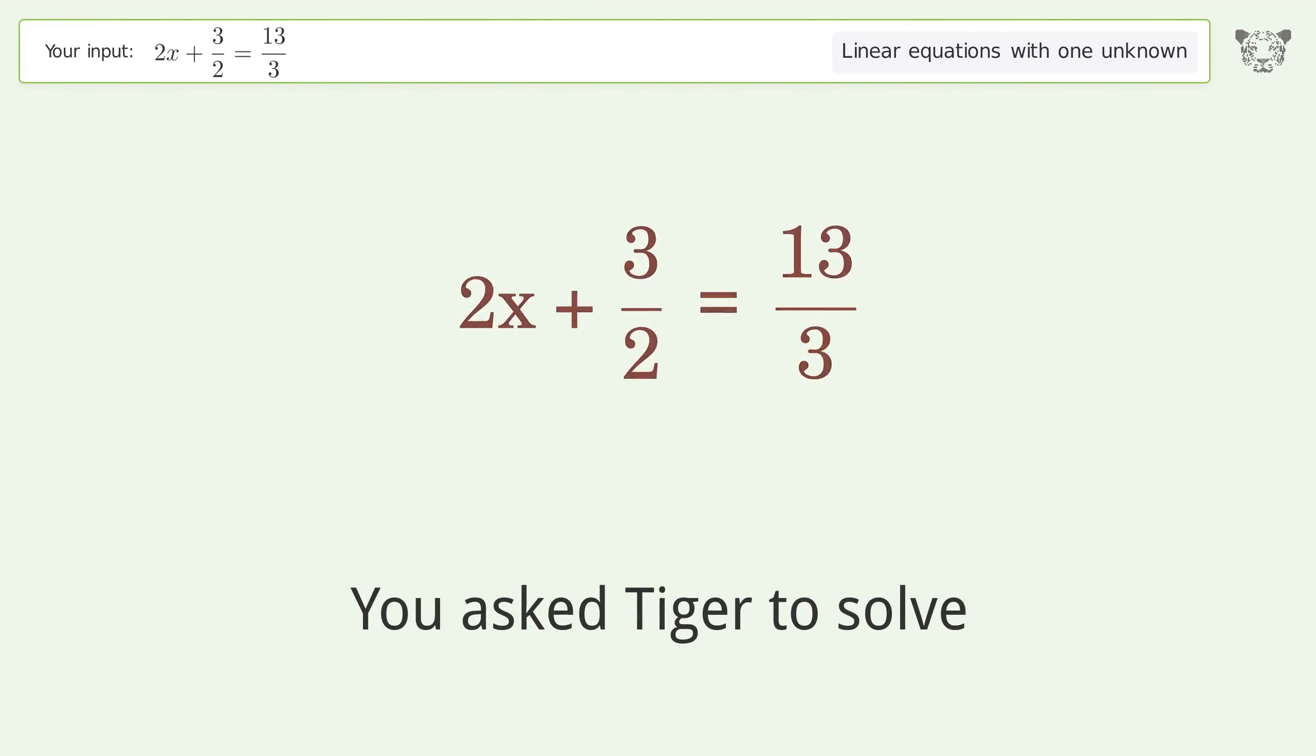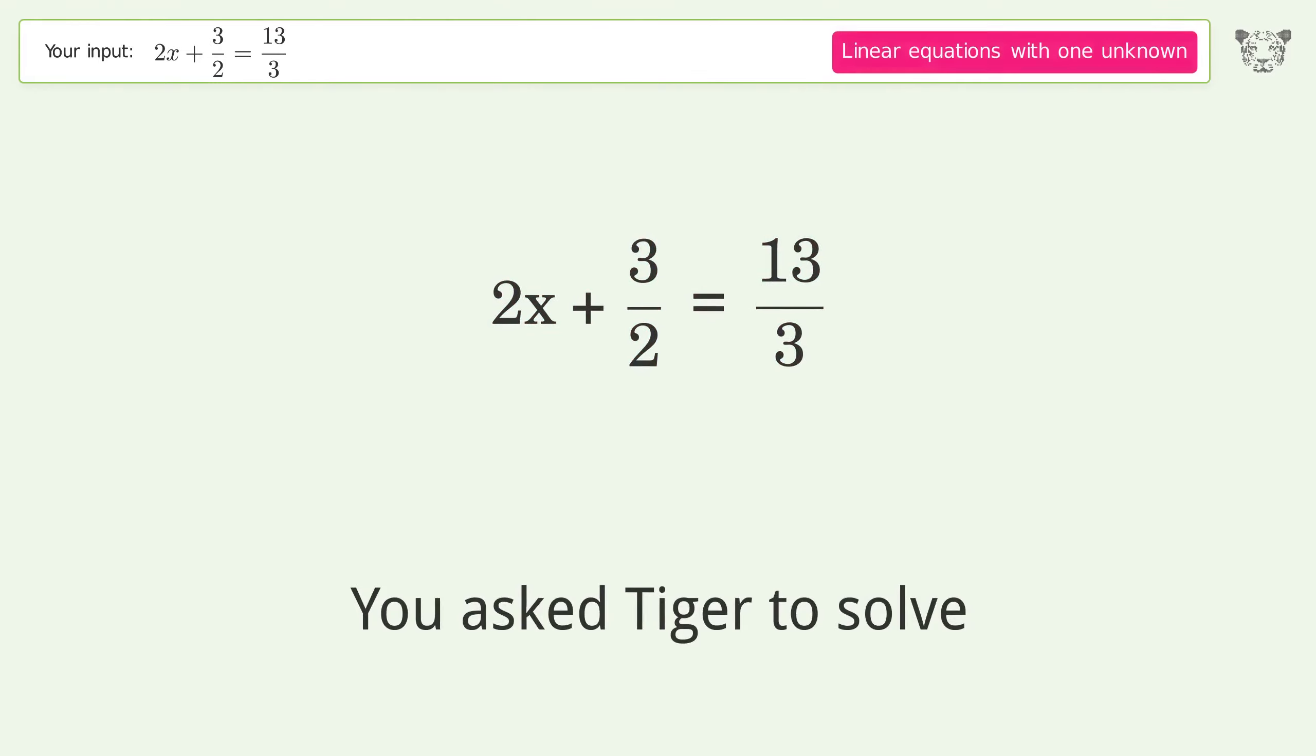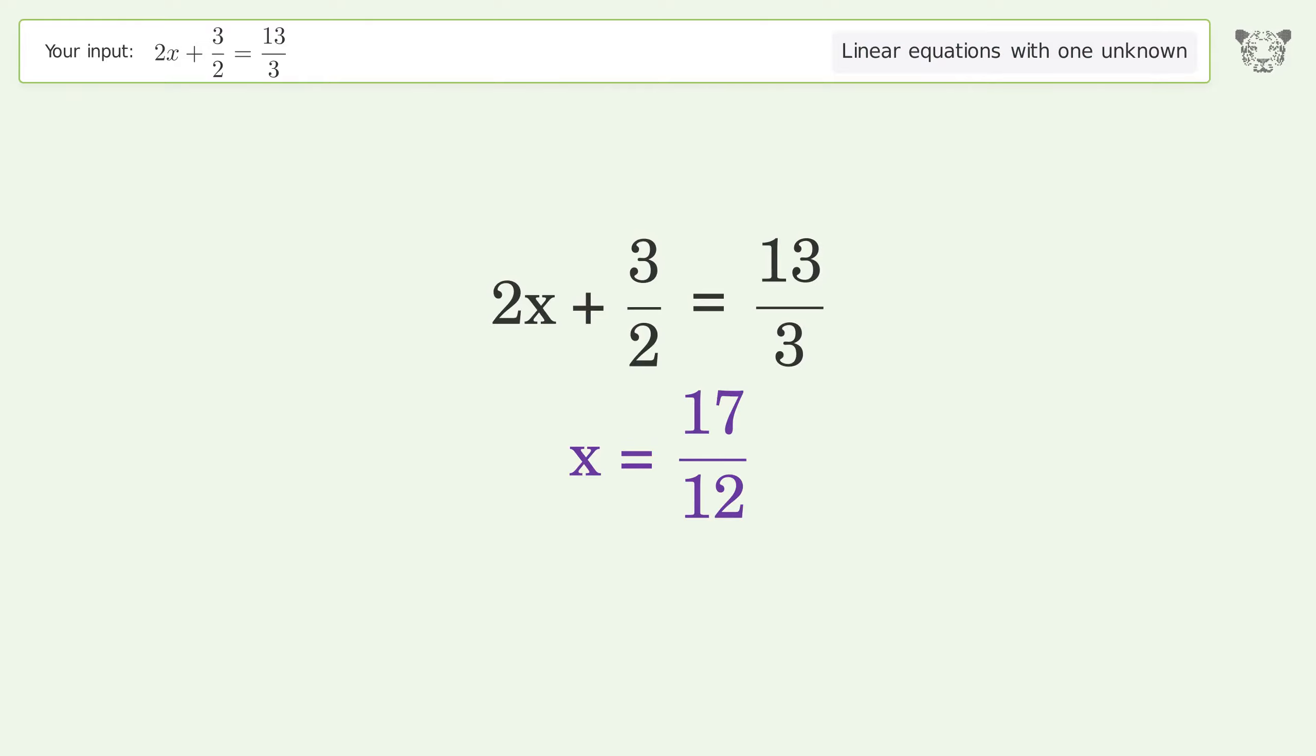You ask Tiger to solve this. It deals with linear equations with one unknown. The final result is x equals 17 over 12.